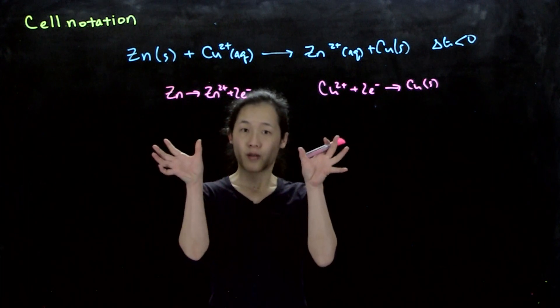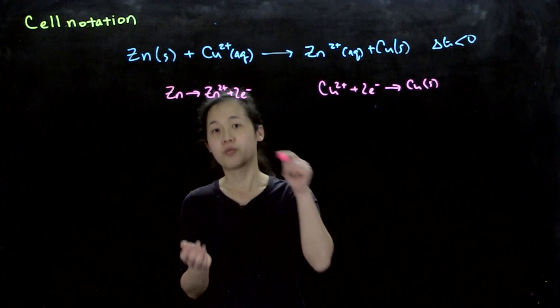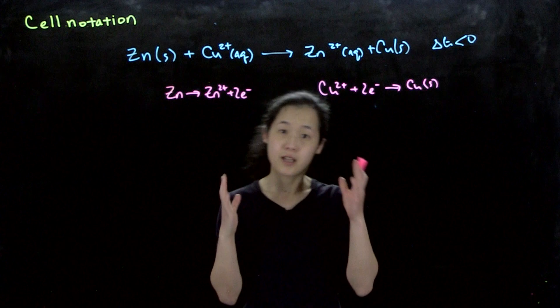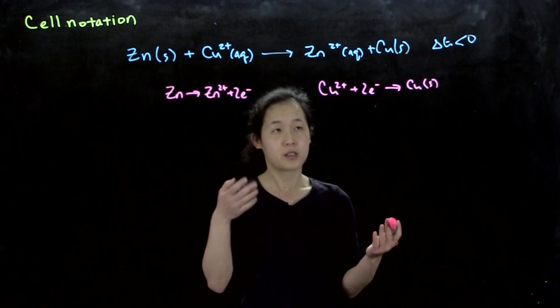We can separate them into two different beakers connected by a salt bridge, and because this reaction is spontaneous, we can generate electrical work that causes a voltage and current.